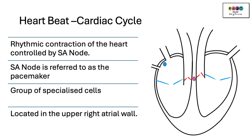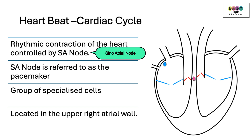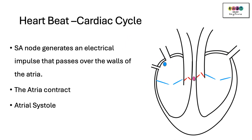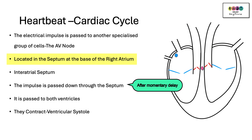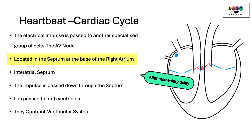The heartbeat or the cardiac cycle is the rhythmic contraction of the heart and is controlled by the SA node. The SA node is the sinoatrial node, referred to as the pacemaker — a group of specialised cells located in the upper right atrial wall. The SA node generates an electrical impulse that passes over the walls of the atria, causing the atria to contract; this is known as atrial systole. The impulse is also passed to the AV node, the atrioventricular node, located in the septum at the base of the right atrium. After a momentary delay, the impulse is relayed down through the septum and passed to the walls of the ventricles, causing them to contract — this is known as ventricular systole.